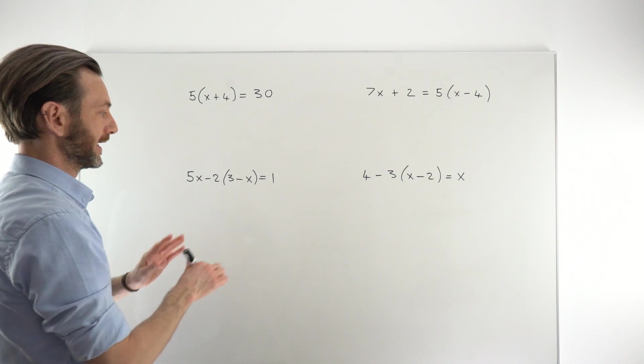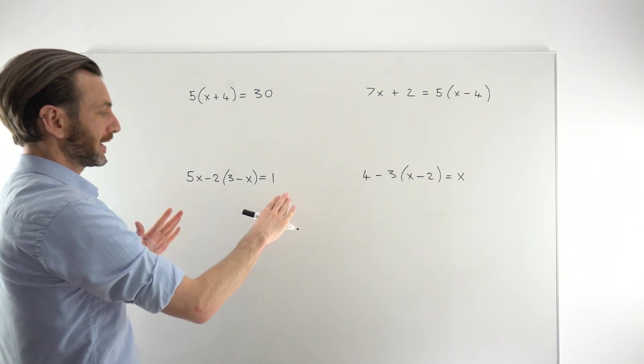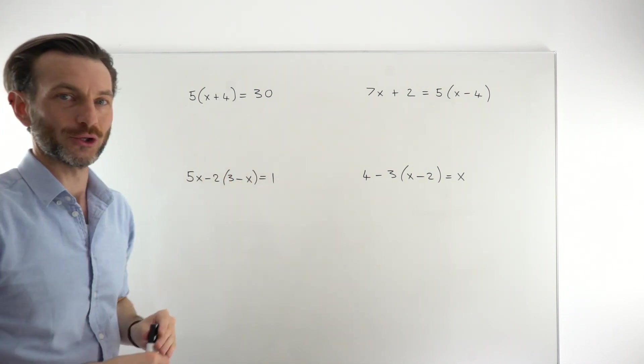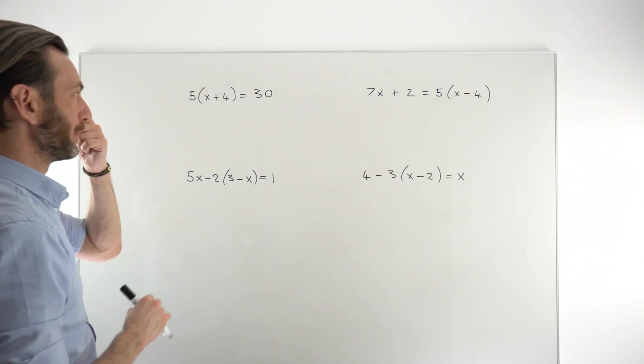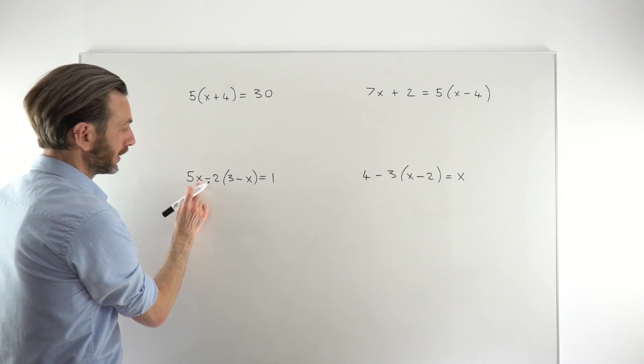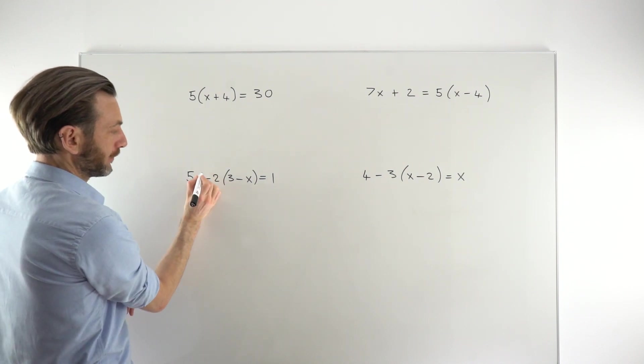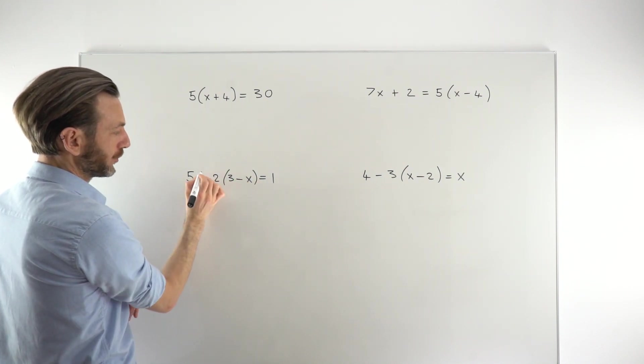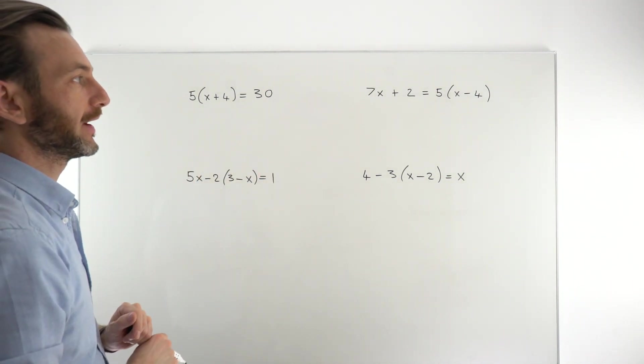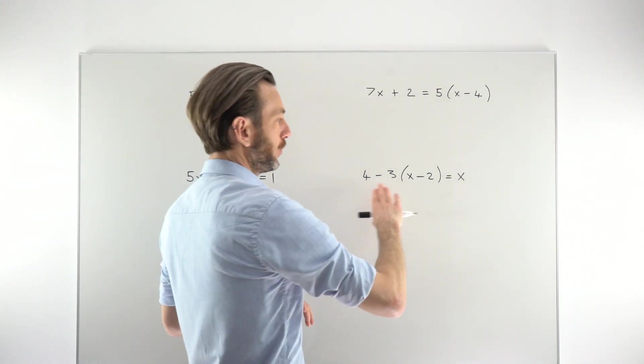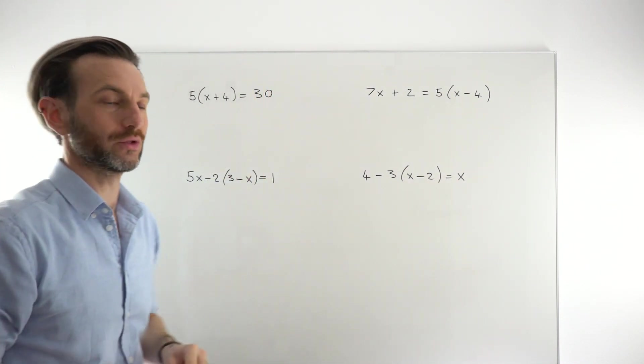So the scenario we'll look at today is how do I get rid of the bracket and then carry on and solve the equation as a normal linear equation. So just a quick recap. A linear equation is one where the variable term, the x terms, have got a power of 1 on them. So you're not allowed an x squared or an x cubed or any higher power. And that has an implication that when we solve these equations, we're just going to get one solution.